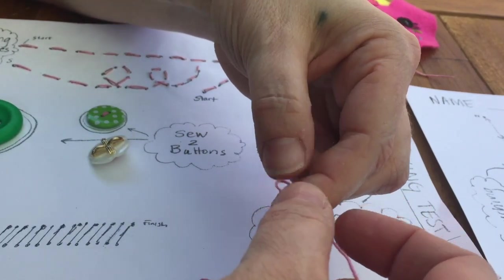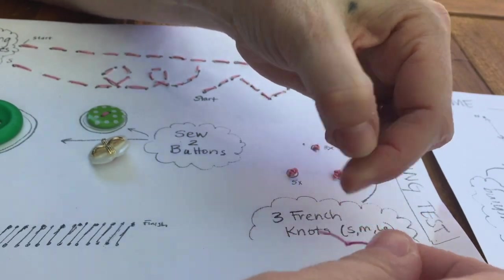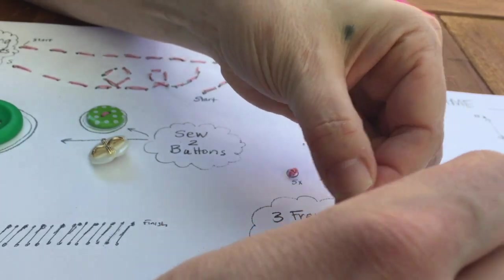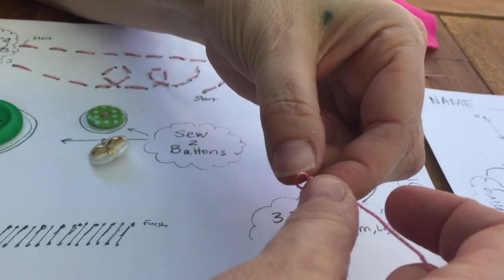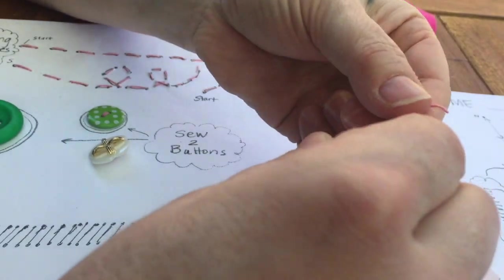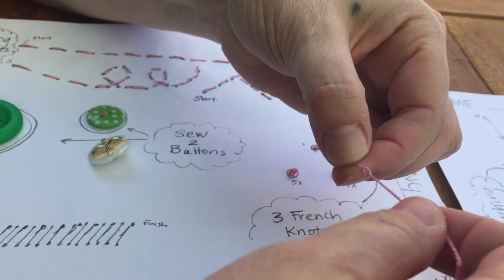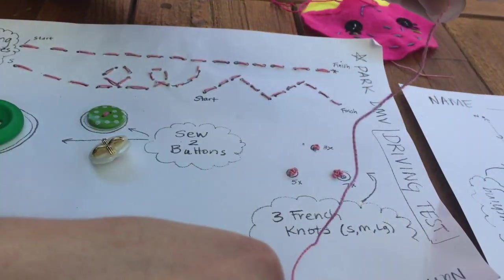When you read the directions on the paper, if it says your first direction is to sew up, when they mean 'up' it means up through the paper, up through the fabric. So that means you're starting on the back side, which is kind of what I've been saying on every video. I've got my double knot.